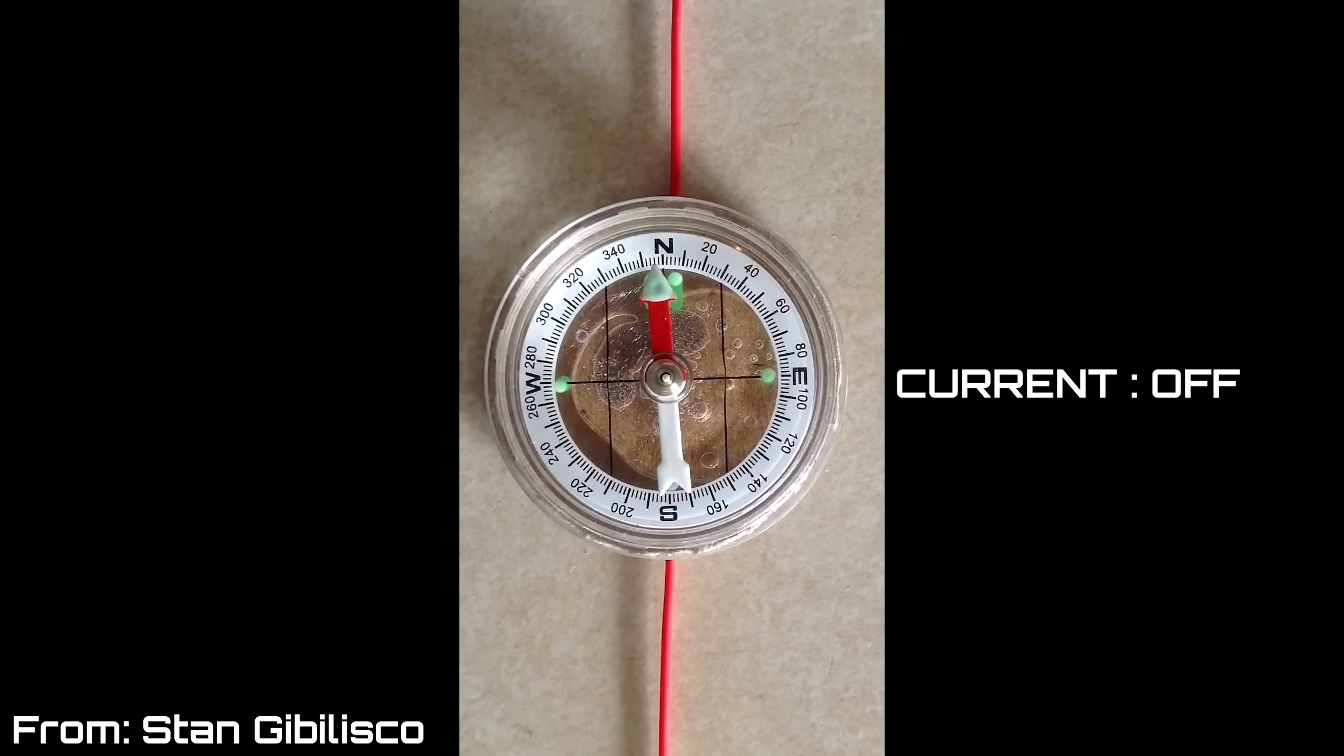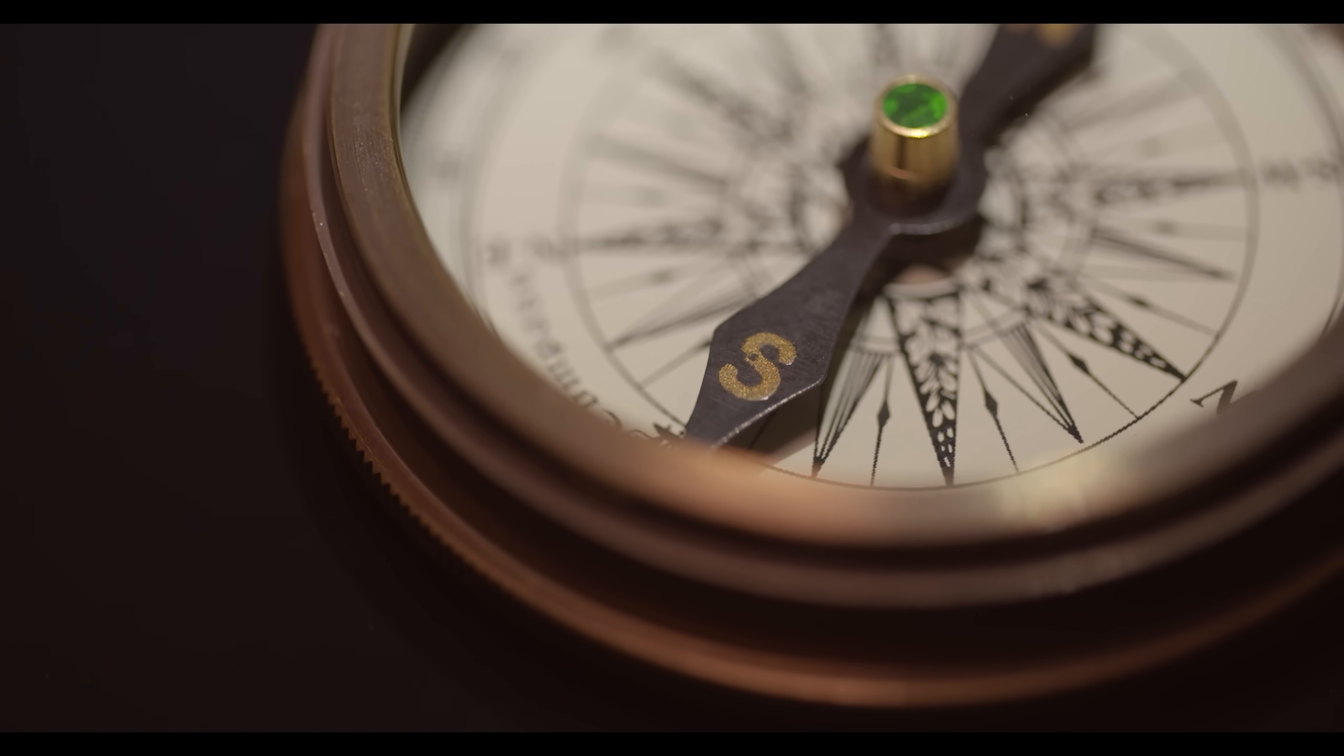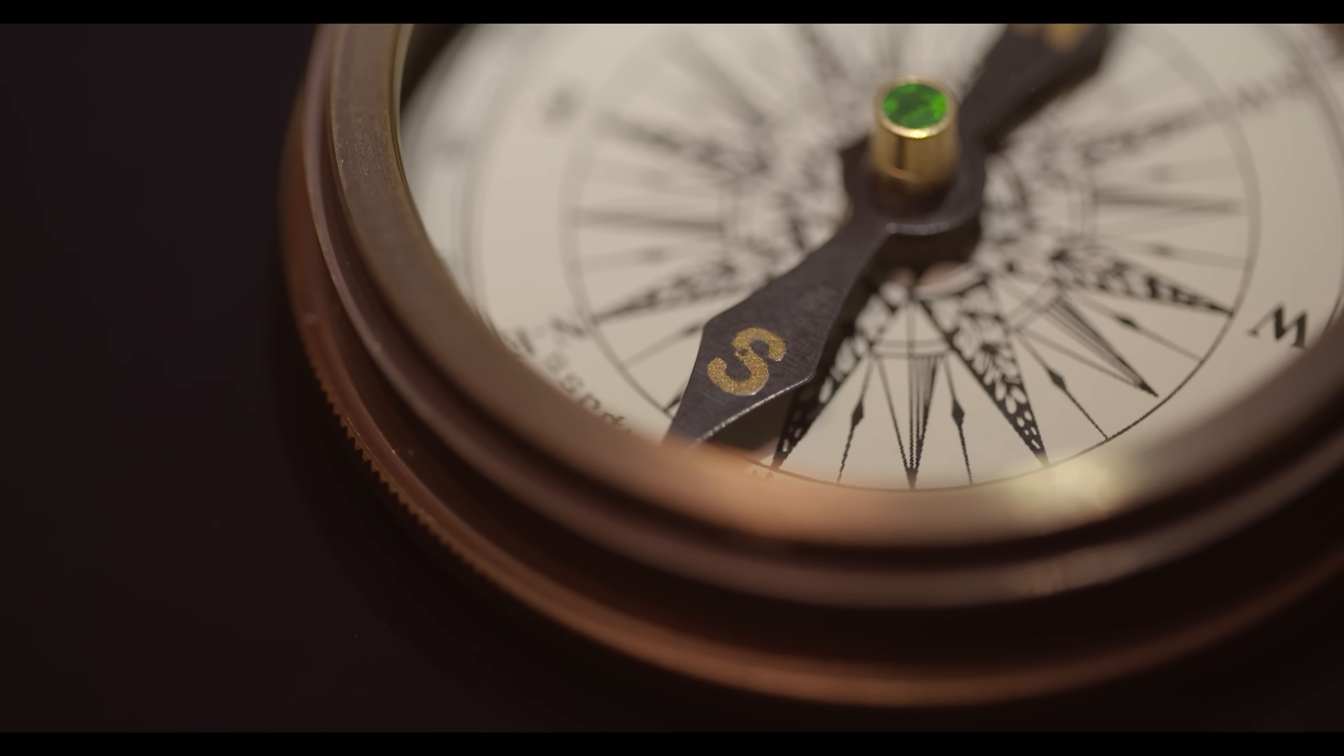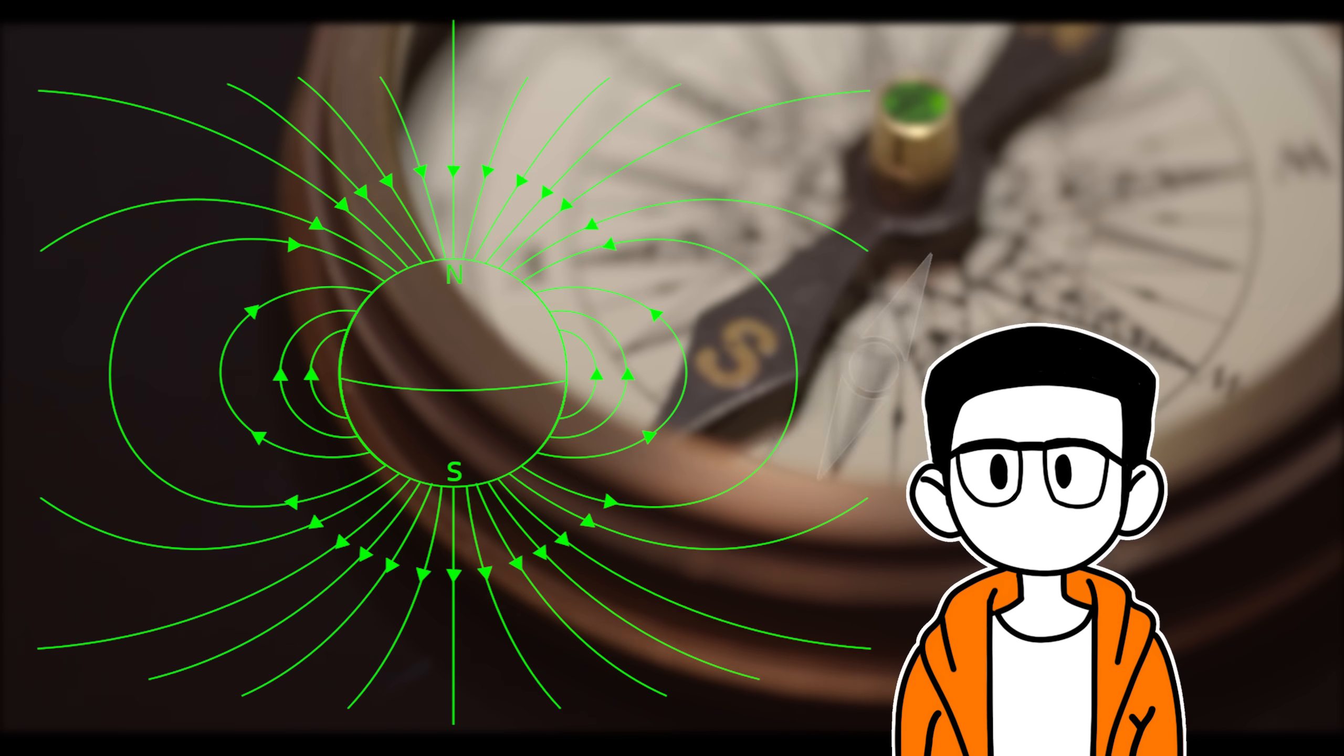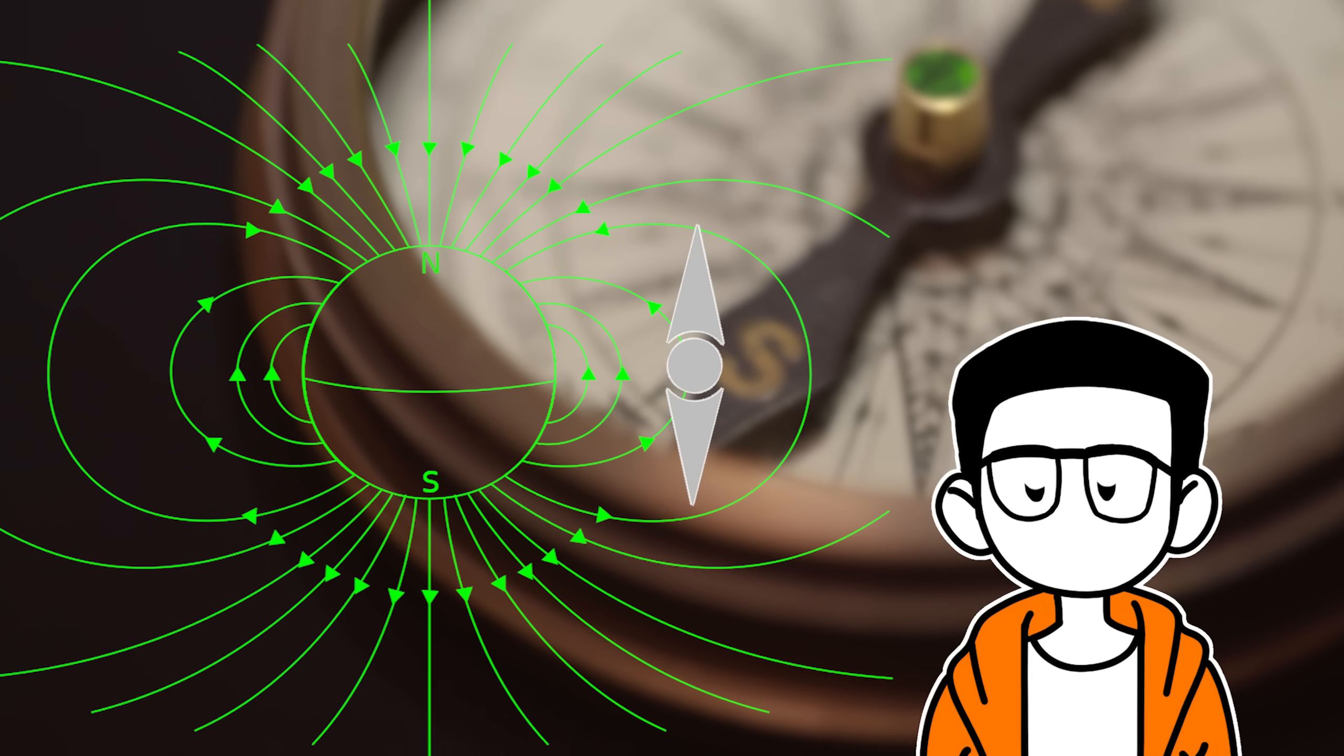It's the Lorentz force essentially trying to align the weak magnetic field of the compass with the strong magnetic field of the electric current. In fact, this alignment principle is the reason why compasses even work in the first place. They are delicate enough to detect the magnetic field of the Earth and properly align itself with that, so the north pole of the compass always points towards the north pole of Earth.